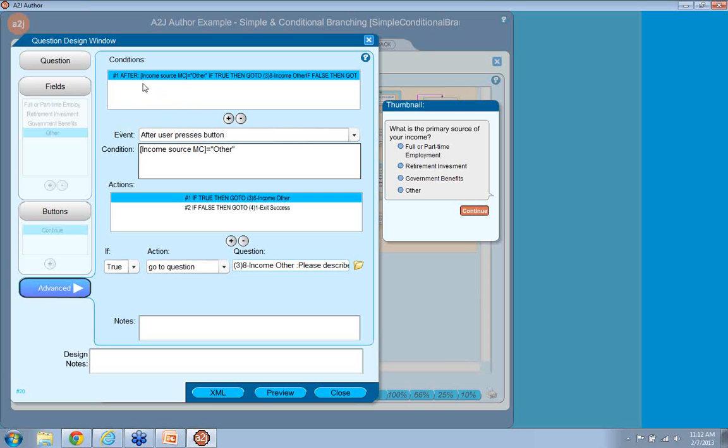So, if we go to this condition with the conditional branching, if after the user presses the button, the button continues, select one of the radio buttons and hit continue, if income_source_MC, the variable that I collected in this field, is other, which would be if they selected other, if that is true, I want to go to the question and ask them, please describe your income. If that is false and that they selected any one of the other three options, then go on to the exit question because they're done with this interview.